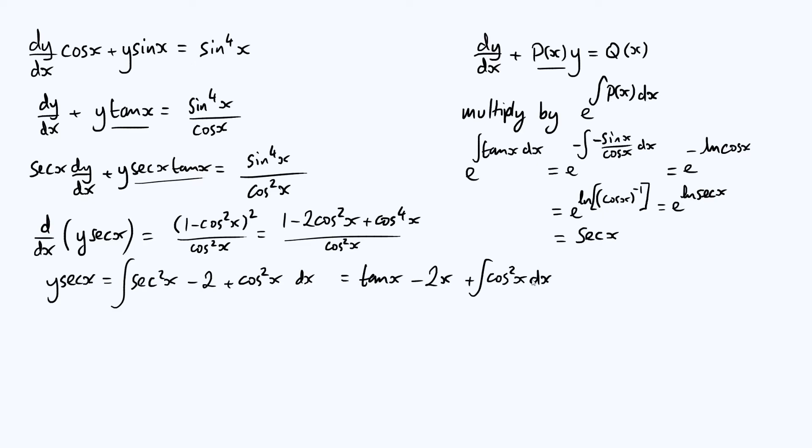The usual way to do that is through a double angle identity. So we know there is a double angle identity that cos of 2x is equal to 2 cos squared x minus 1. And so we can use this identity to express cos squared in terms of cos 2x. Our next line is going to be that y sec x is equal to tan x minus 2x. And so cos squared x is going to be a half of 1 plus cos 2x just by rearranging that identity. So we're going to get half of the integral of 1 plus cos of 2x with respect to x.